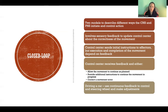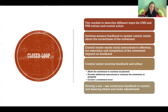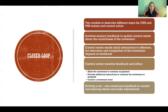An example is driving a car. We use continuous feedback to control the steering wheel and make adjustments. As we're driving, we're executing a motor plan — it's a motor skill to steer the car — and we're using constant visual feedback about what's happening in front of us and where the car is driving to make corrections to our motor plan as we go.